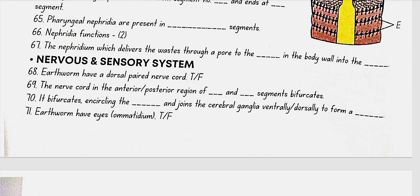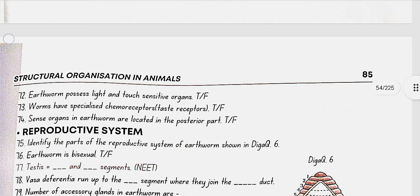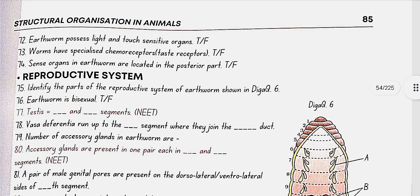Nervous and sensory system. Earthworm has a ventral paired nerve cord — the statement that it is dorsal is false. The nerve cord in the anterior region of the 3rd and 4th segments bifurcates, encircling the pharynx and joining the cerebral ganglia dorsally to form a nerve ring. Earthworm does not have eyes — false. Earthworm possesses light and touch sensitive organs — yes, true. Worms have specialized chemoreceptors and taste receptors — true. Sense organs in earthworm are located in the anterior part.